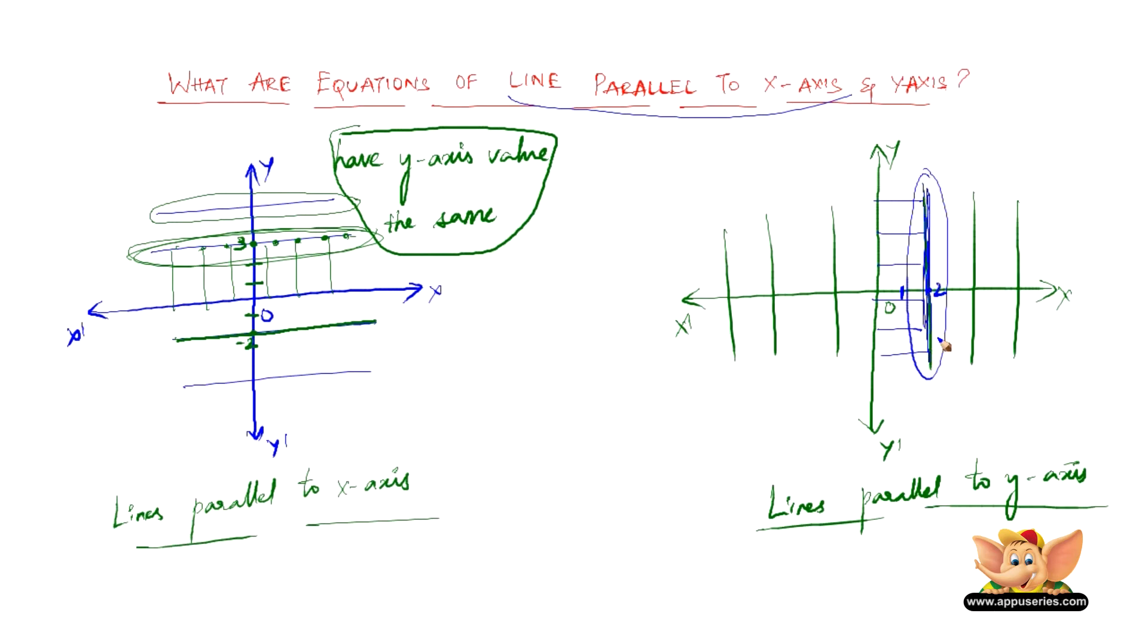We can conclude that lines parallel to the y-axis have the x-coordinate value the same. Summarizing: the equation of a line parallel to the x-axis always has the y-coordinate same with its x-value changing, and the equation of a line parallel to the y-axis has the same x-value while its y-value keeps changing.